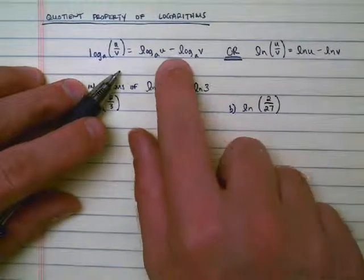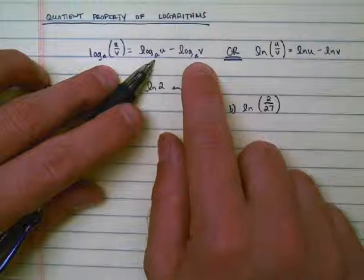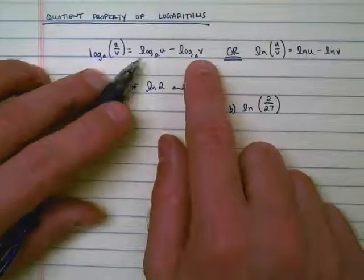Two separate logarithms, both of base a, so that number doesn't change. Whatever this value is, we're going to have the same value here.